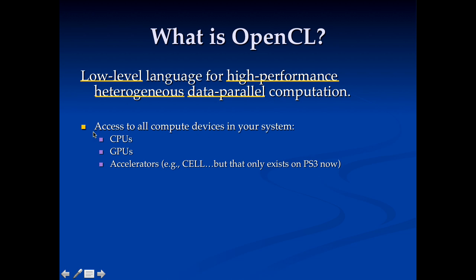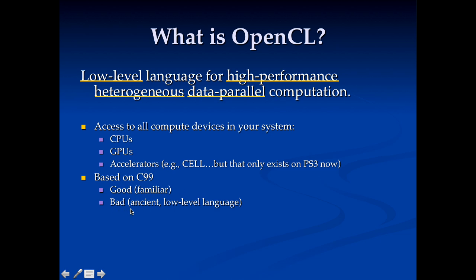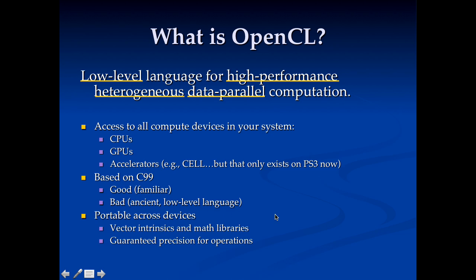The benefits of OpenCL: it gives you access to all the devices in your system — CPUs, GPUs, accelerators, and even FPGAs. It's based on C99, so the programming language is very familiar to C programmers. However, C99 is not a very user-friendly language. It's also portable across devices, which is really the big thing about OpenCL. If you're going to run on devices from different vendors, OpenCL gives you a consistent way to express vectors, so you don't have to deal with different manufacturers' ways of doing SIMD.